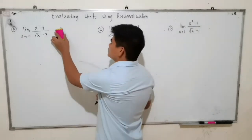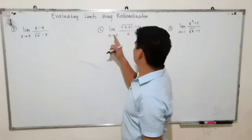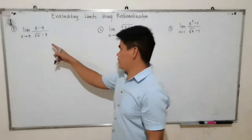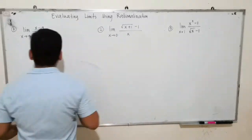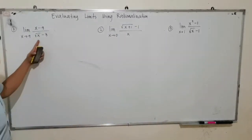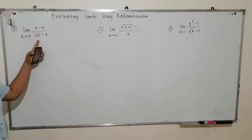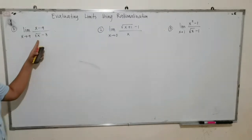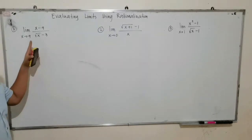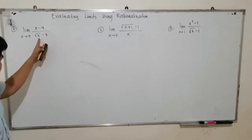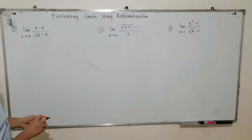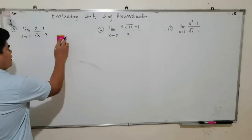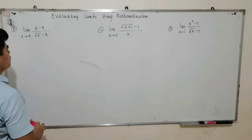Let us solve this one using rationalization. As you observe in this example, the denominator is a binomial. Since the denominator is binomial, we can multiply it by its conjugate.